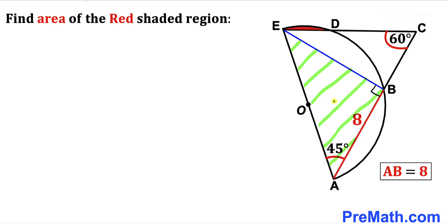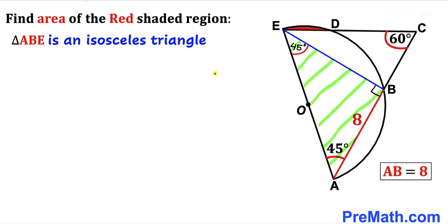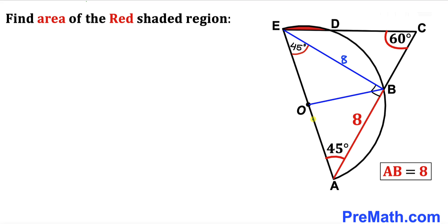Since A, B, and E are three distinct points and AE is the diameter, angle ABE is 90 degrees. In right triangle ABE, one angle is 45 degrees and another is 90 degrees, so the third angle must also be 45 degrees. Therefore triangle ABE is isosceles, meaning AB equals EB, so EB equals 8 units.